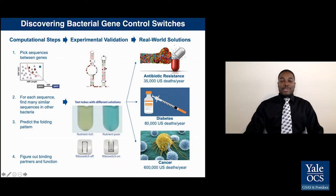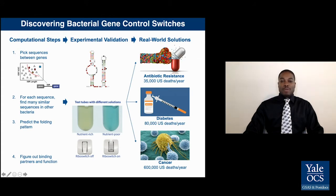Annually in the U.S. alone, 35,000 people die from antibiotic resistance, 80,000 people die from diabetes, and 600,000 people die from all forms of cancer. What do these problems have in common?